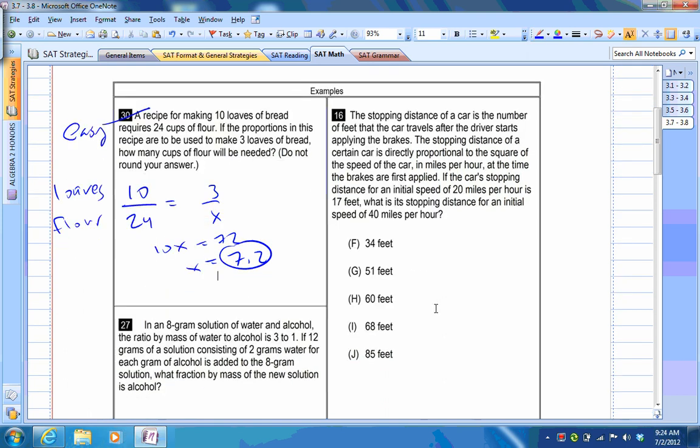Let's look at 16. That one's probably, I'd consider medium. So the stopping distance of a car is the number of feet that the car travels after the driver starts applying the brakes. Stopping distance of a certain car is directly proportional, that's an important word you see there, to the square of the speed of the car. Stopping distance for 20 miles per hour is 17 feet. What's the stopping distance for 40 miles per hour?